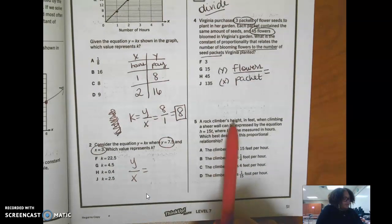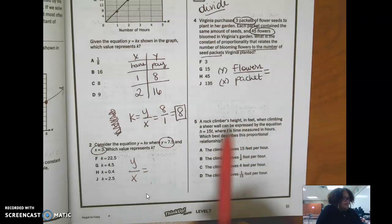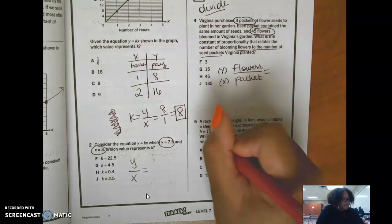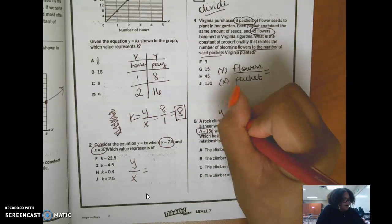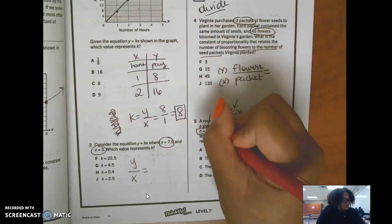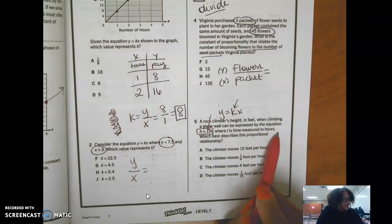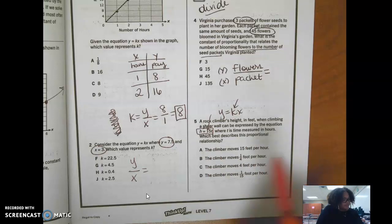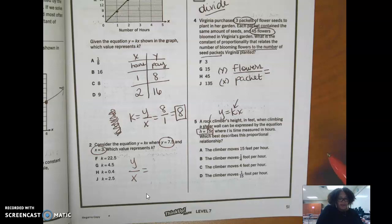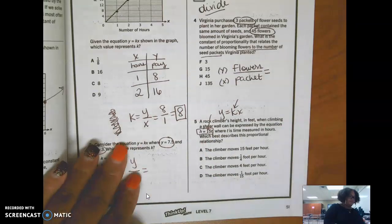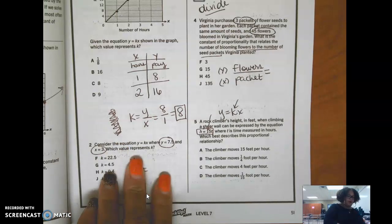Alright, number five. A rock climber's height in feet when climbing a sheer wall can be expressed by the equation h equals 15t. So this is kind of like y equals kx. This is k, and so is this. Where t is the time measured in hours, which best describes the proportional relationship. So we need to find the right one that matches this k right here. And it's going to be feet per hour.